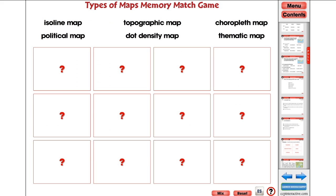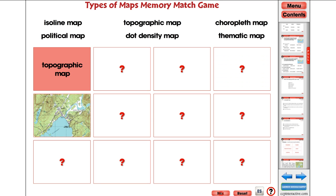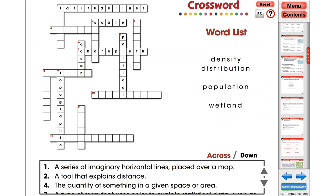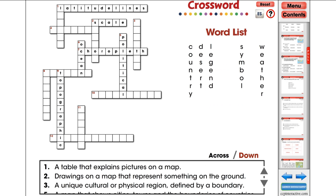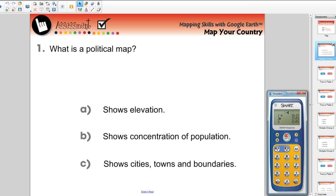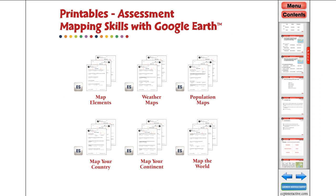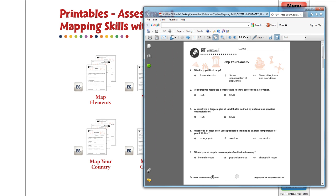Each interactive lesson also contains a memory match game that allows you to mix up the order of the cards for unlimited play, a crossword with separated across and down clues, a word search that allows you to undo and clear, and a smart response assessment available for Smart Notebook users with embedded smart response. A PDF version of the assessment is also provided in our printable section.